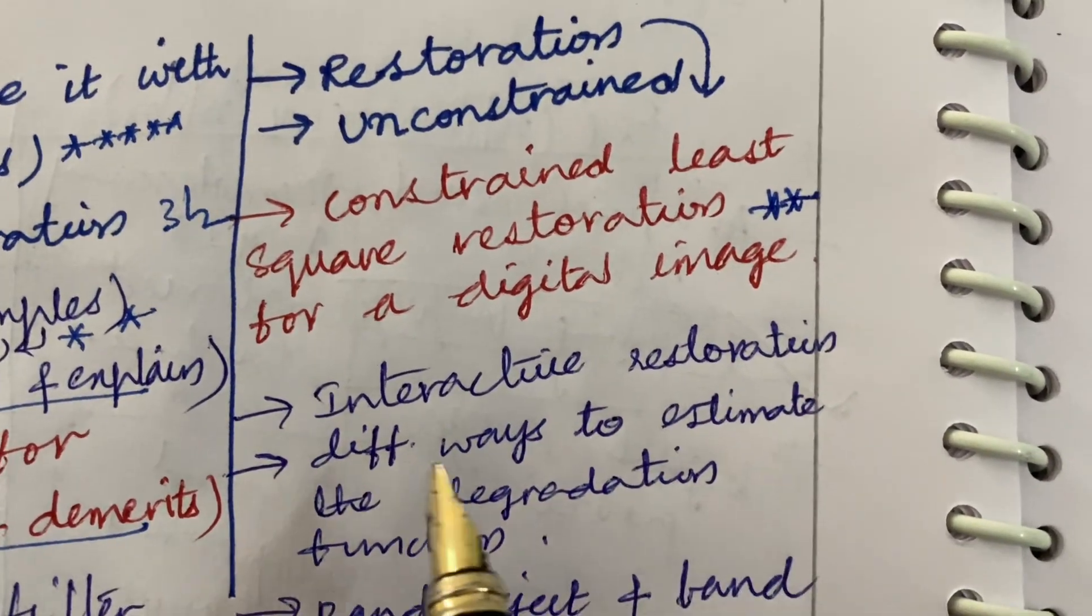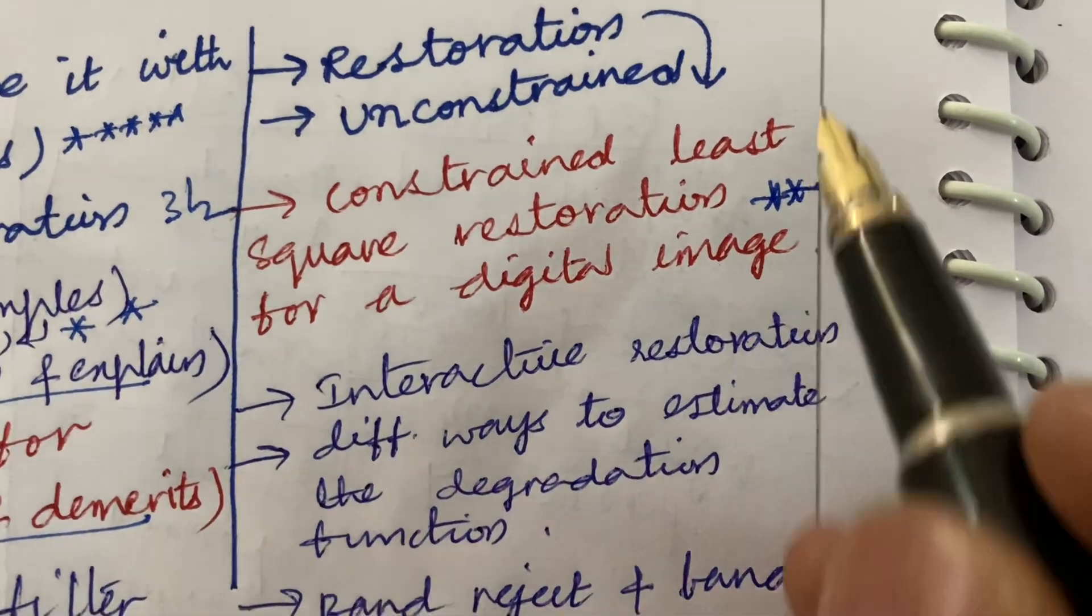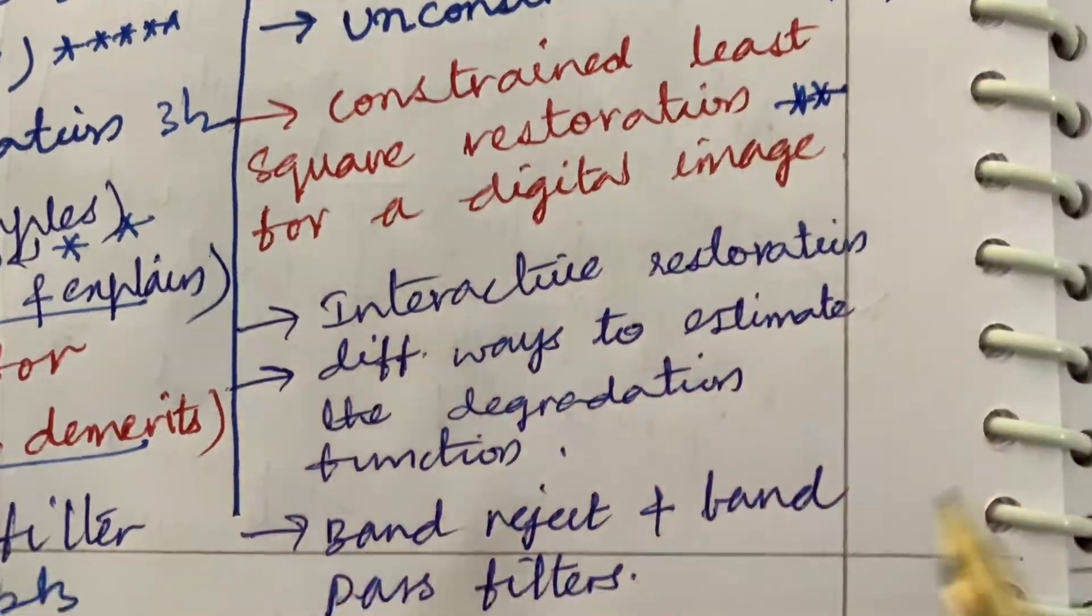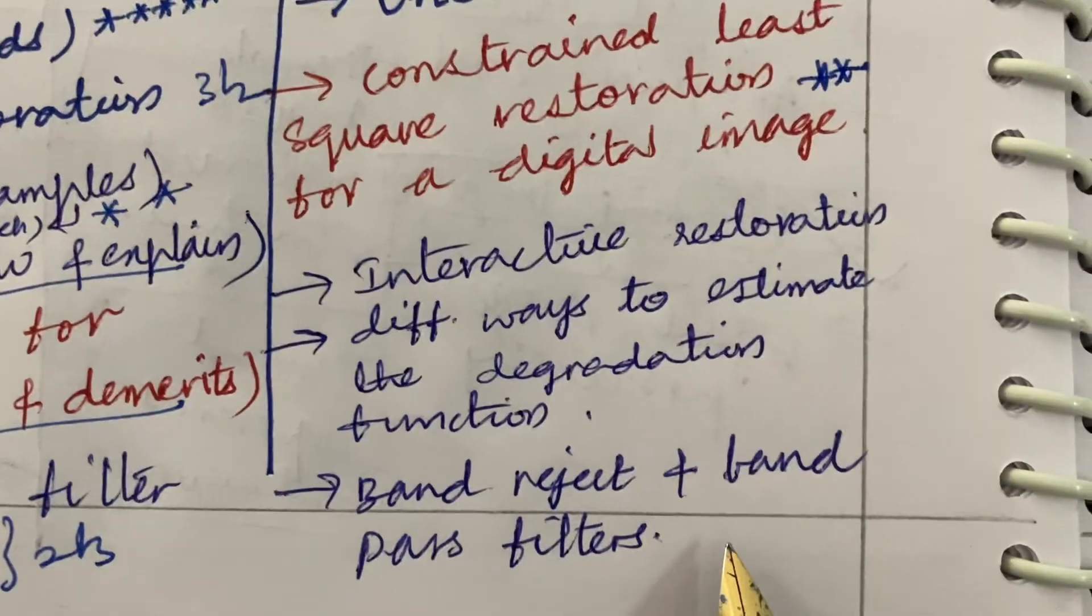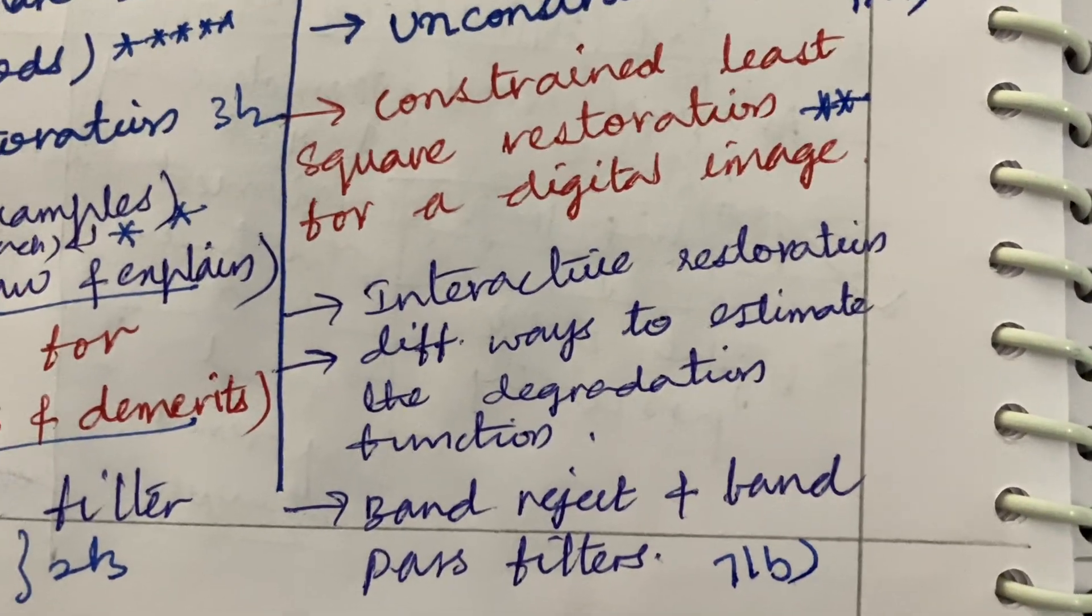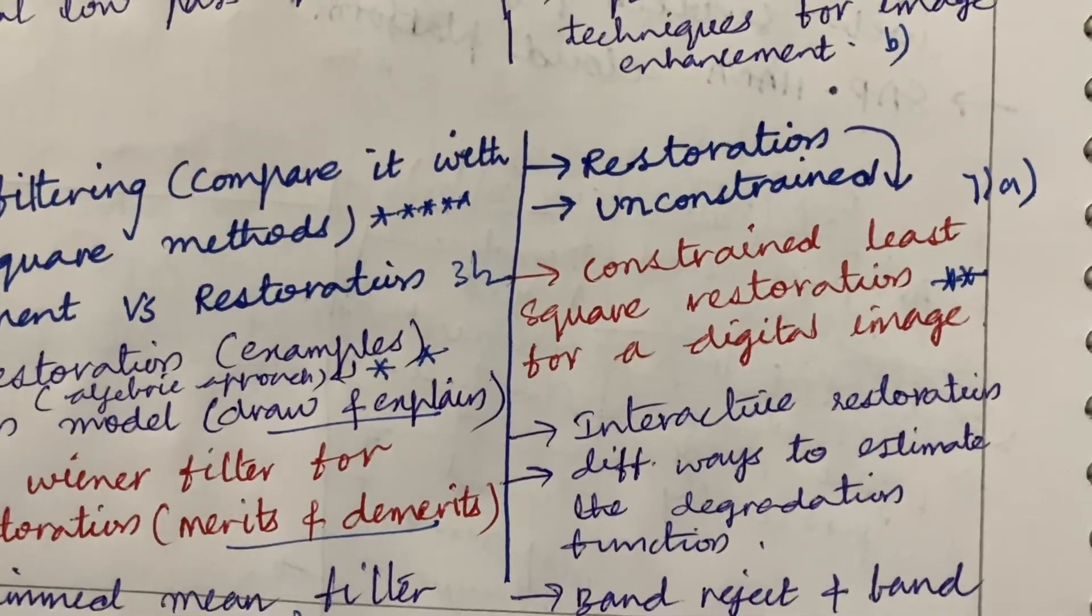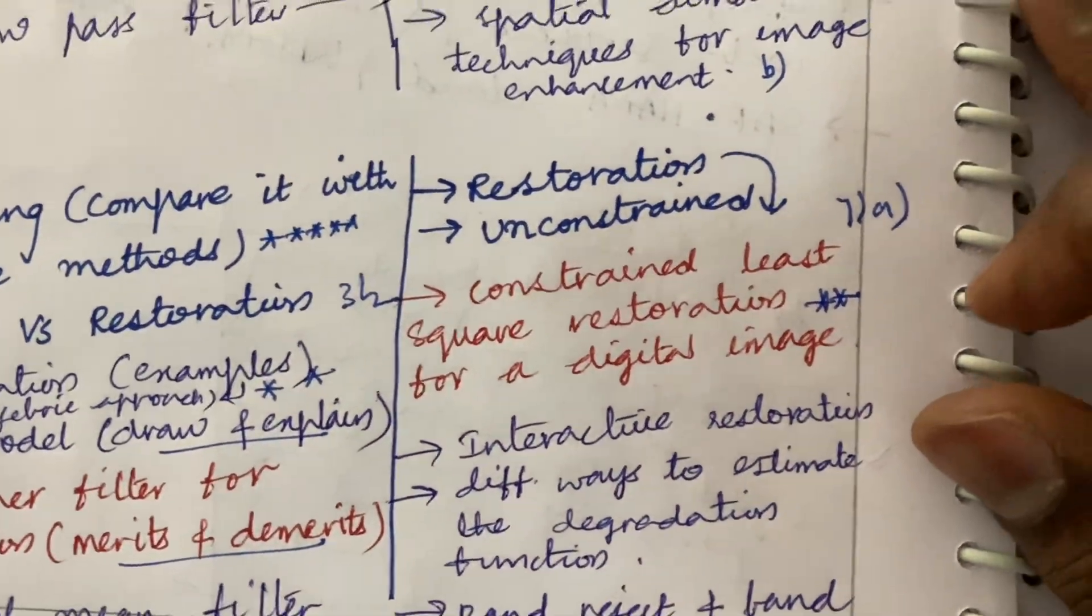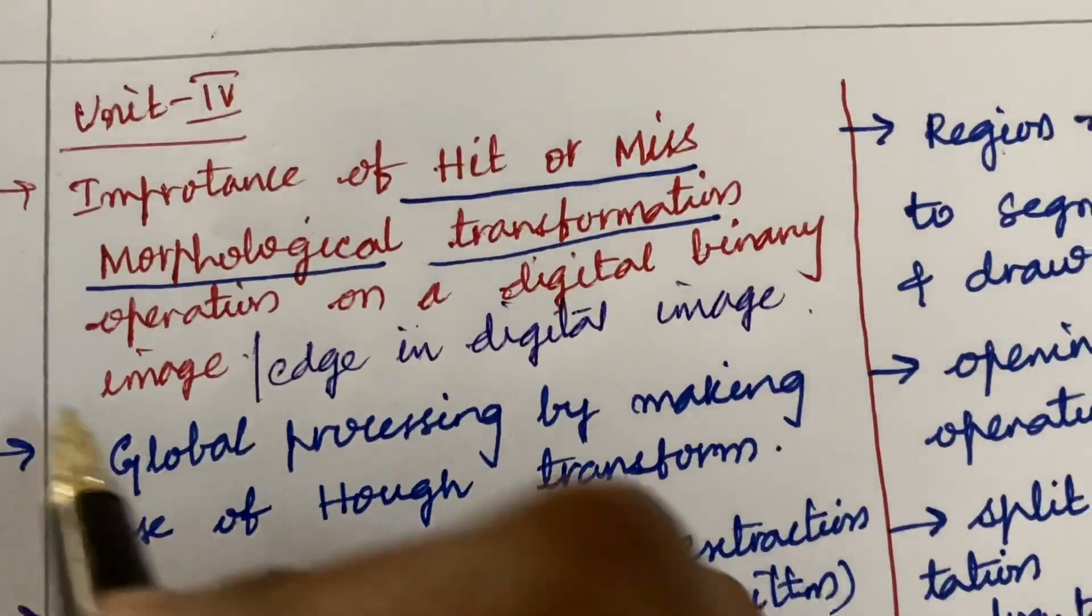Restoration as well as unconstrained and the constrained least square restoration for a digital image is also said to be a topmost question. Interactive restoration and the different ways to estimate the degradation function may be 7A equation and the band reject and band pass filter may be 7B equation. Dear students, hope you are going to work out very neatly along with the neat sketches in the examination so that you are going to get good marks.